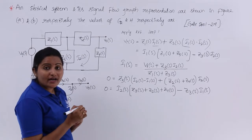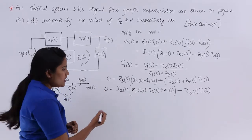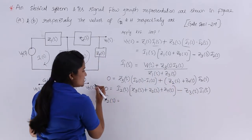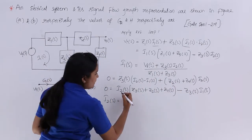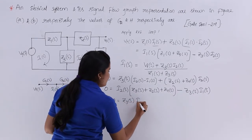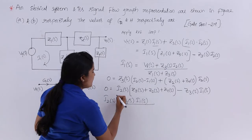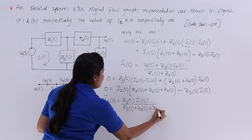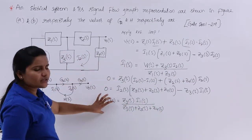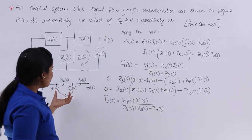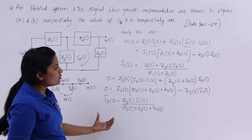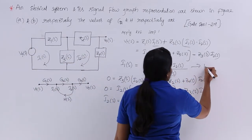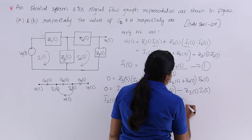From the loop 2 equation, I2(S) equals Z3(S)·I1(S) divided by (Z3(S) + Z2(S) + Z4(S)). We now have two current equations — I call these equation 1 (for I1) and equation 2 (for I2). I will now derive the same currents from the signal flow graph and compare them.